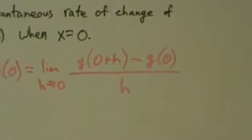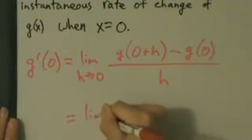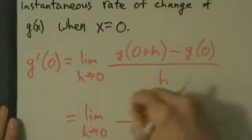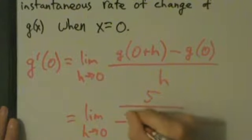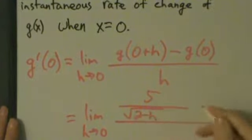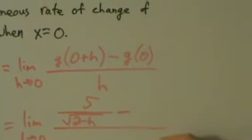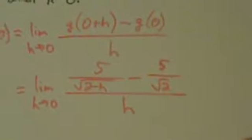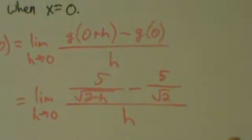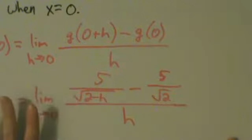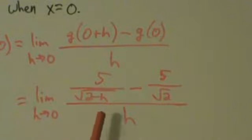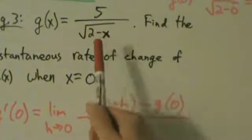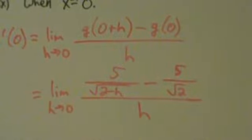So let's take these and put them back into the limit definition. We get the limit as h goes to 0 of 5 divided by the square root of 2 minus h, minus g of 0 which was 5 over root 2, all divided by h. This is pretty unpleasant. It combines elements of the last few things we looked at — there are square roots, and while it's not a rational function because it has a square root, it does have a numerator and denominator, so we have to use techniques for both types of functions.